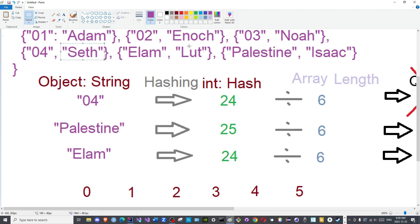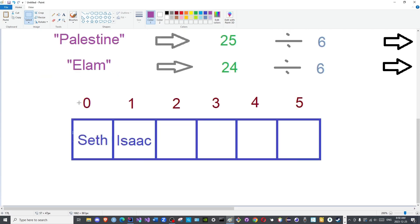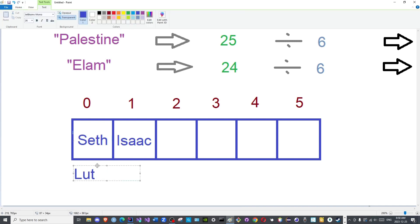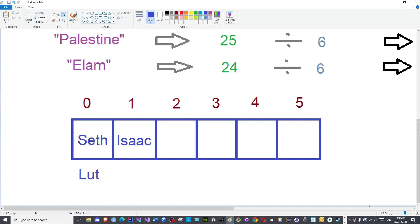So what does that mean? This will be placed at index zero. Unfortunately, index zero is occupied. So how will this be stored here if it is being occupied? This is known as a collision. They are colliding with one another.